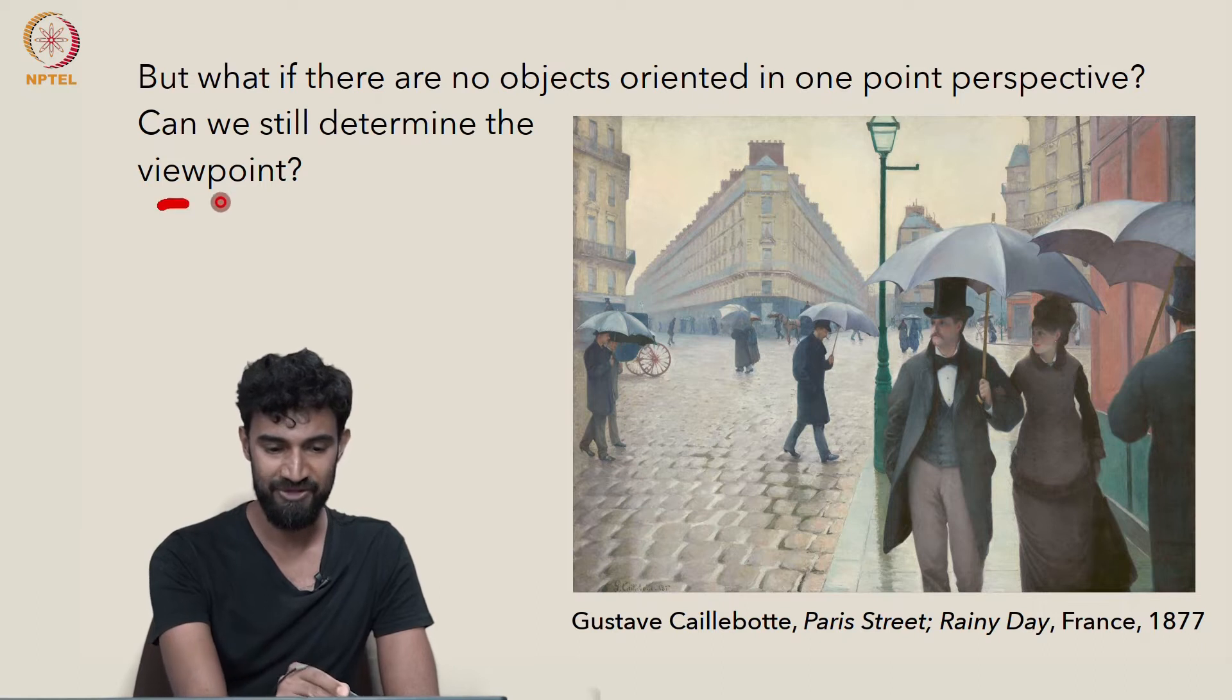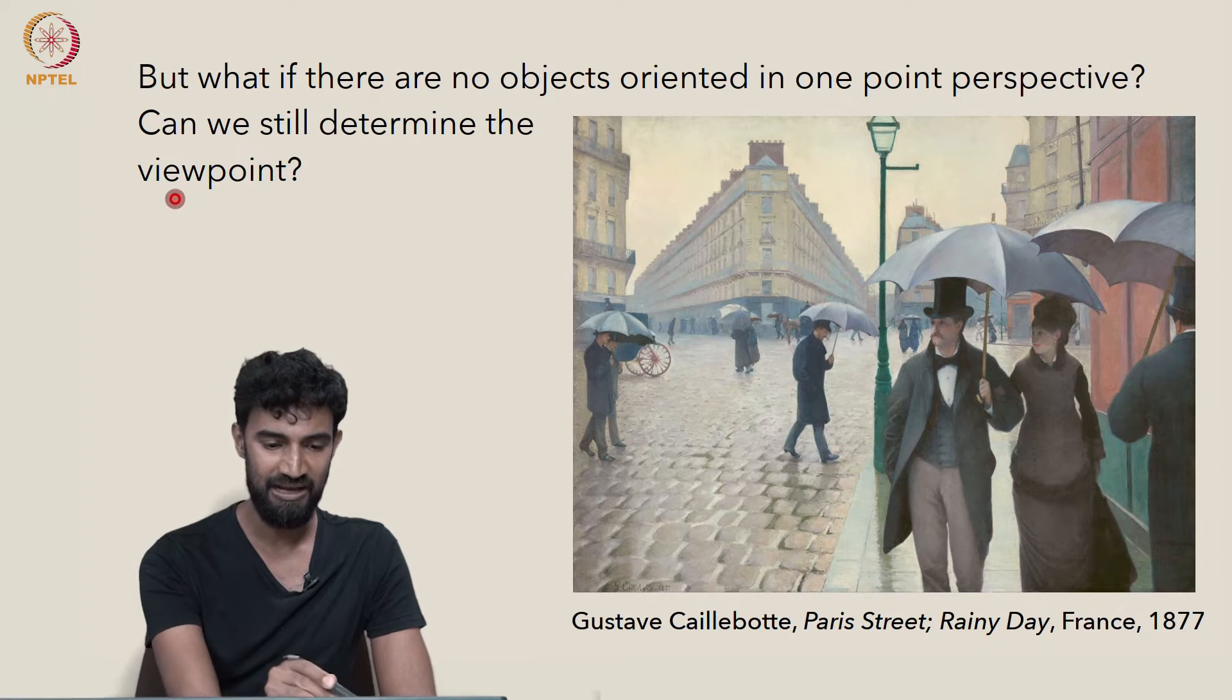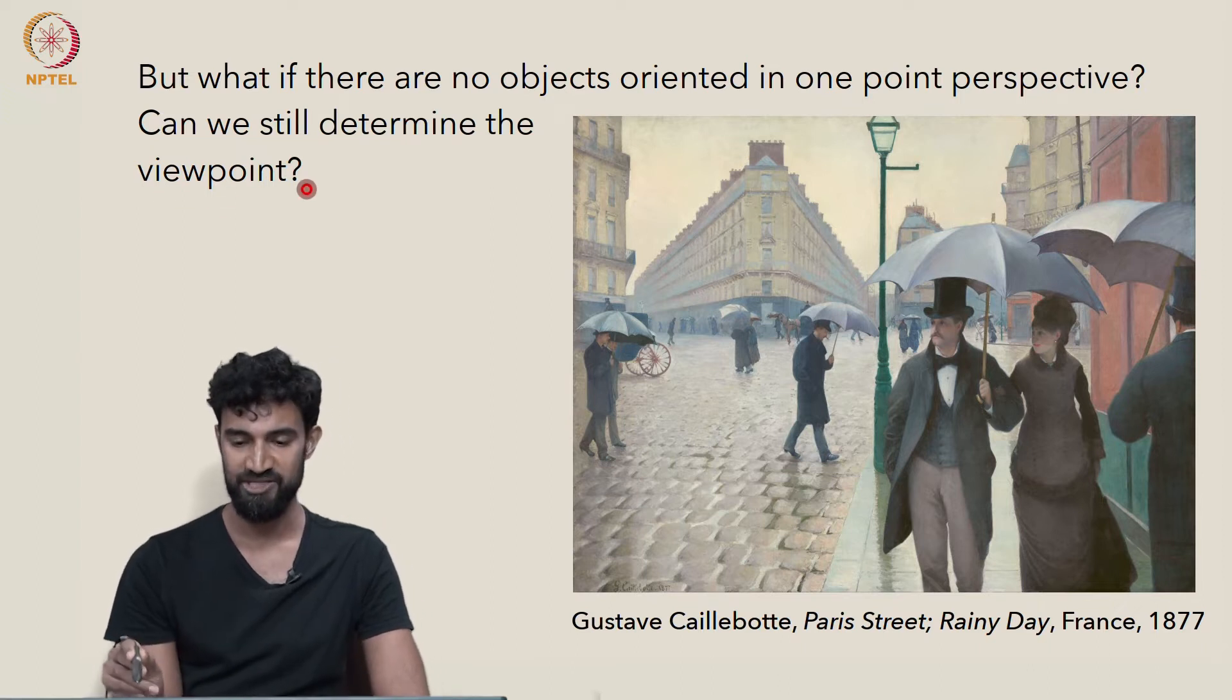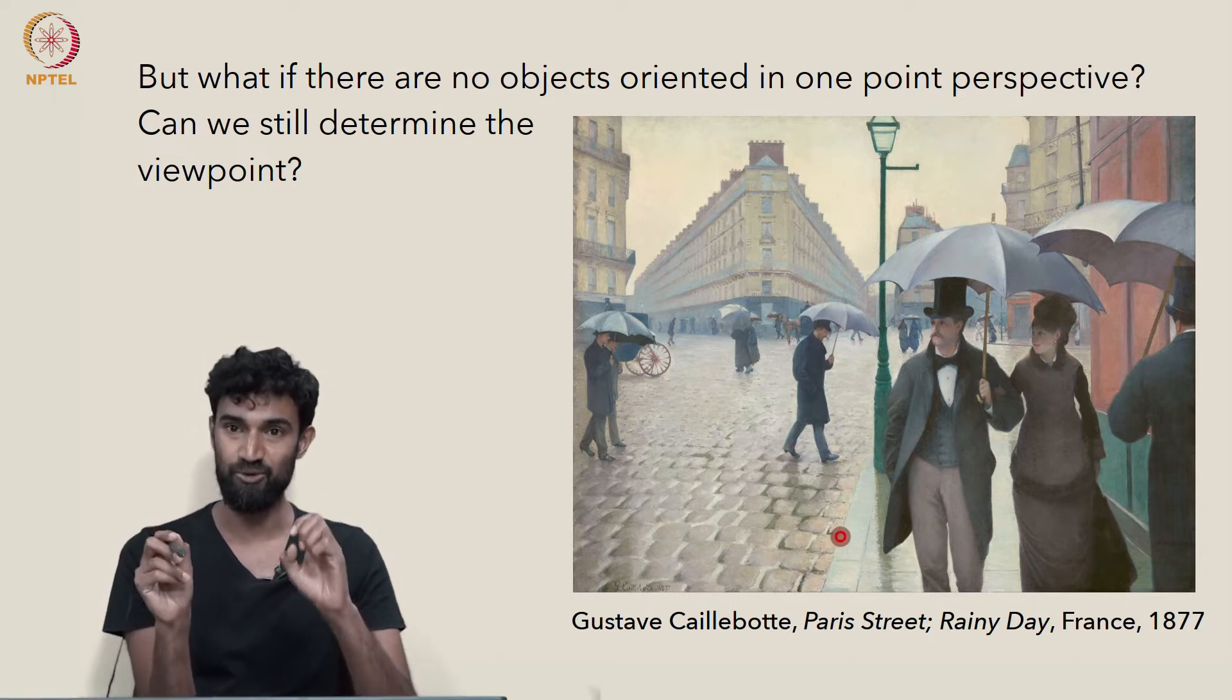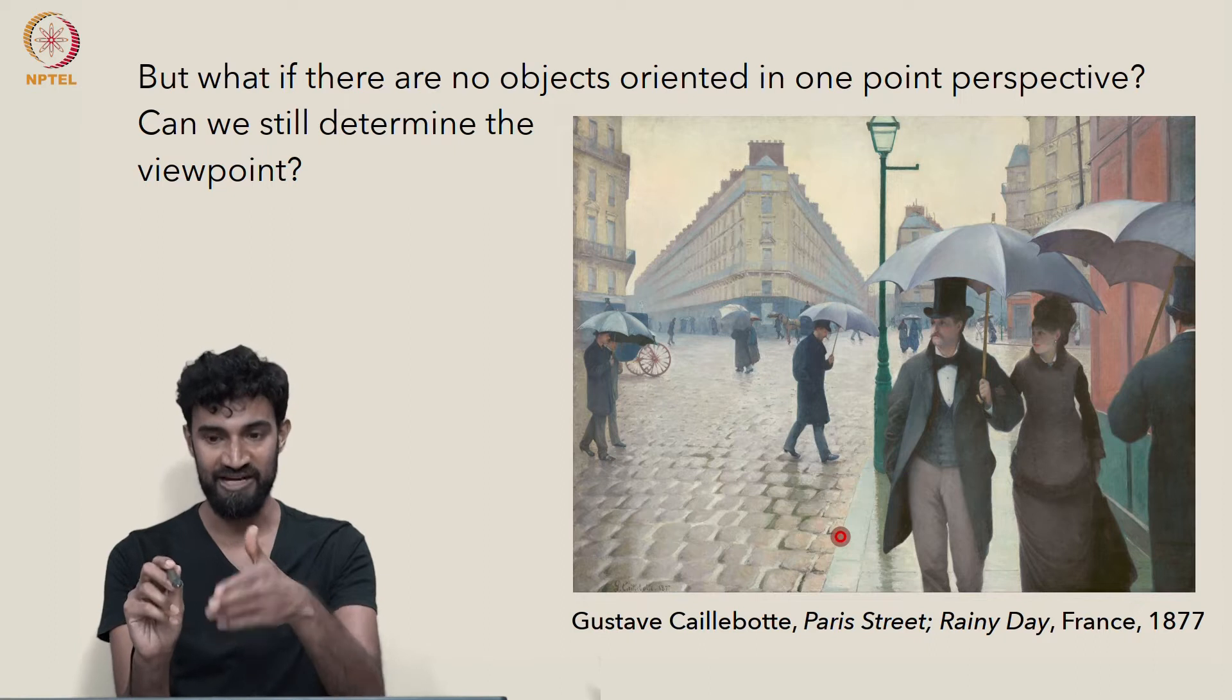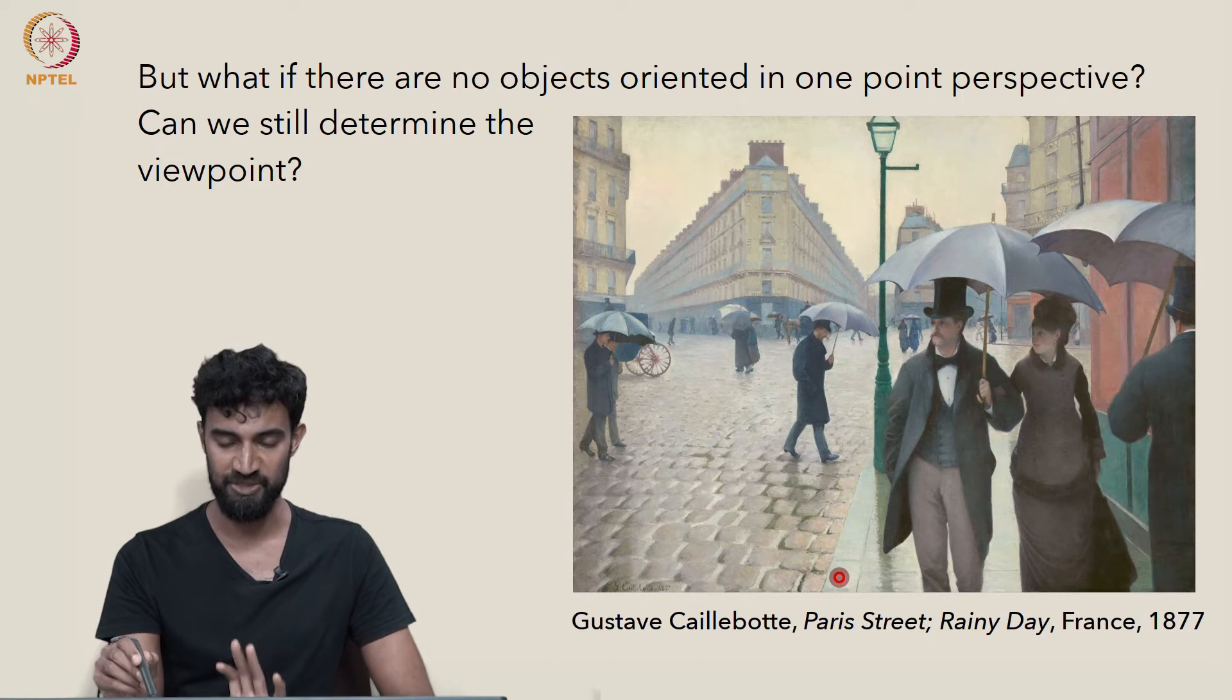So here's one example of a two point perspective painting. And I'm actually not sure the easiest way to determine the viewpoint. If there was any object here that was oriented in one point perspective, that would give us a clear way. We just have to find that one vanishing point. But I don't see any objects that are obviously oriented in one point perspective.